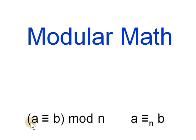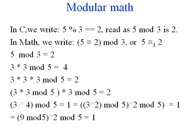Let's look at modular math. A is equivalent to b modulo n, written like this with the small n under the sign, means that a and b are the same under modulus. In C, we write 5 % 3 equal to 2, that means the remainder of 5 divided by 3 is 2. We say 5 mod 3 is 2, or 2 is the remainder 5 mod 3. We can also write 5 equals 2 mod 3.